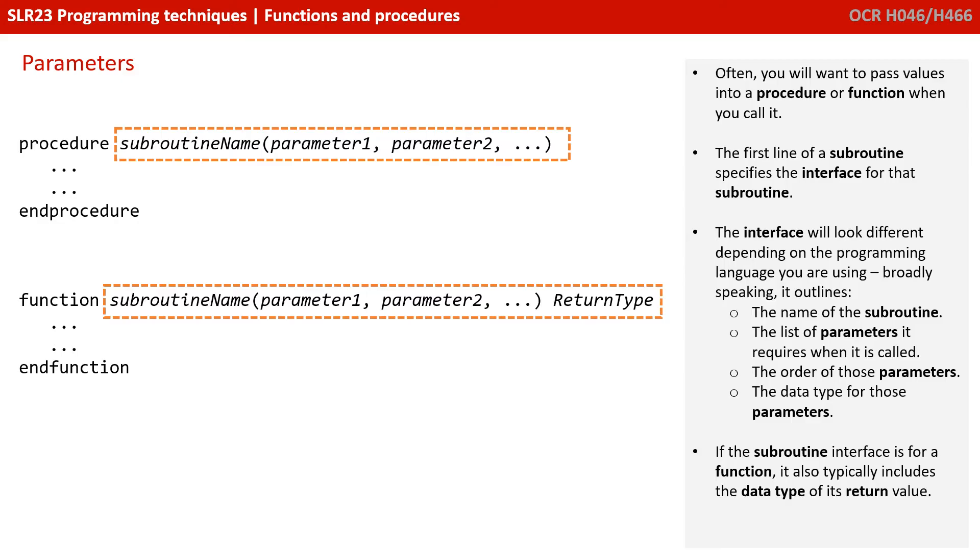Often you'll want to pass values into a procedure or function when you call it. The first line of a subroutine specifies the interface for that subroutine. The interface will look different depending on the programming language you're using, but broadly speaking, it outlines the name of the subroutine, the list of parameters it requires when it's called, the order of these parameters, and the data type for these parameters. If the subroutine interface is for a function, it also typically includes the data type for the return value it's going to chuck out.